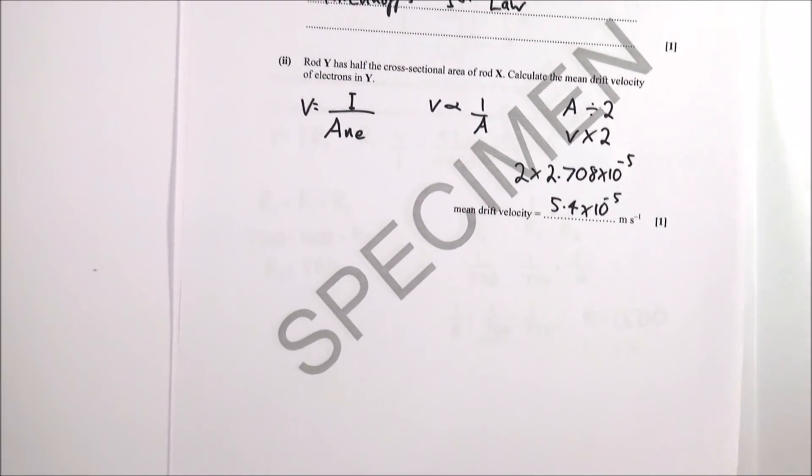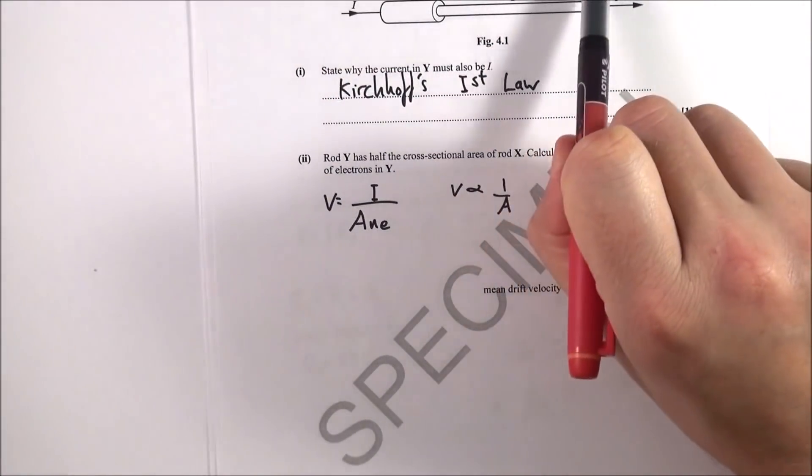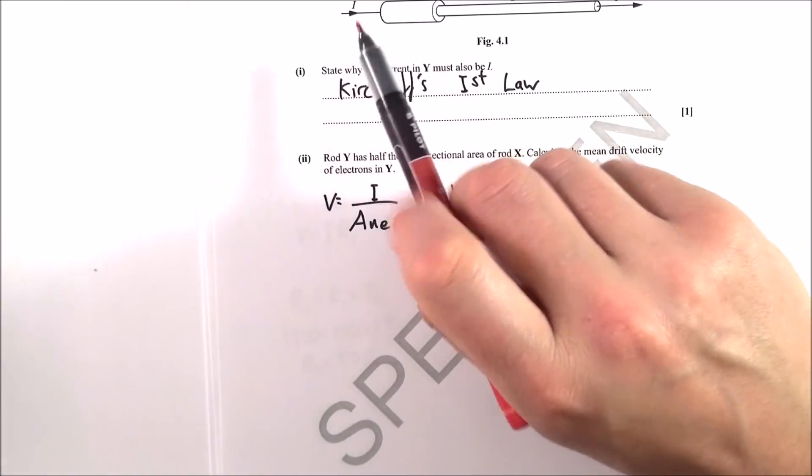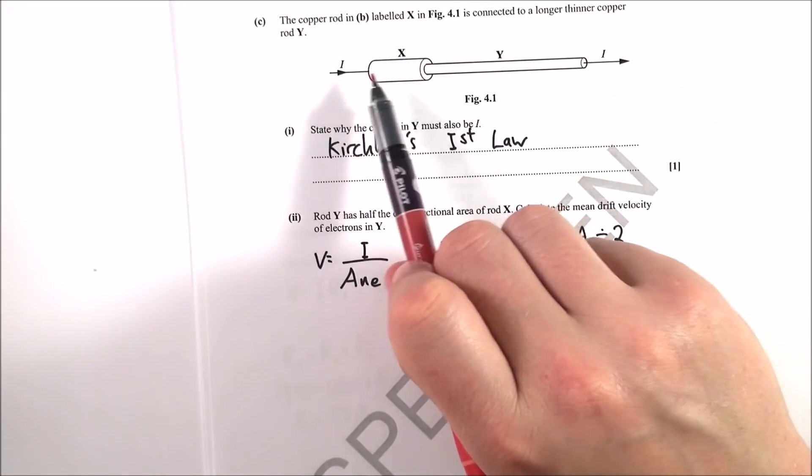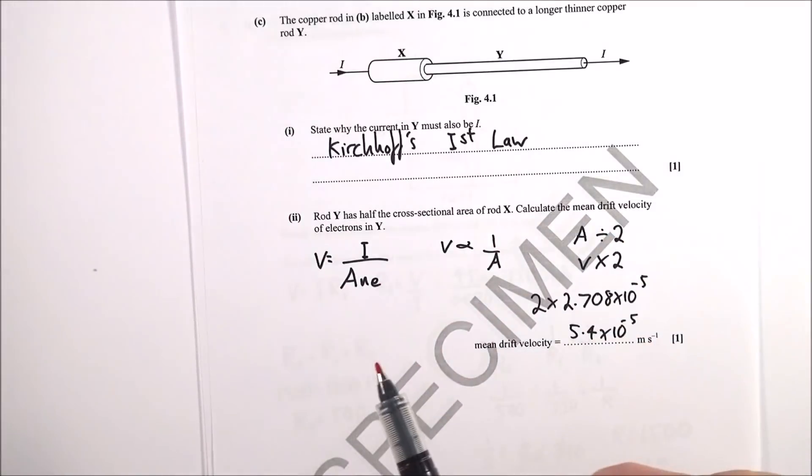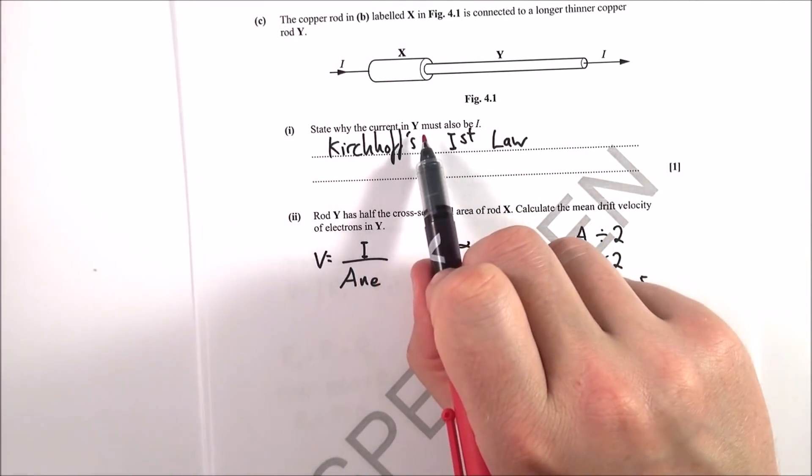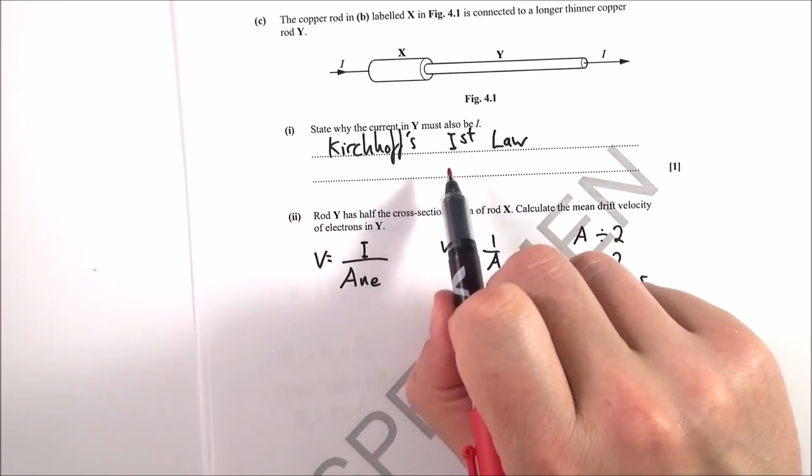The next part. The copper rod is connected to a longer, thinner copper rod Y, so you've got basically copper, and therefore the number density is going to be the same, and you've got something which has a bigger cross-sectional area. So state why the current in Y must also be the current I.